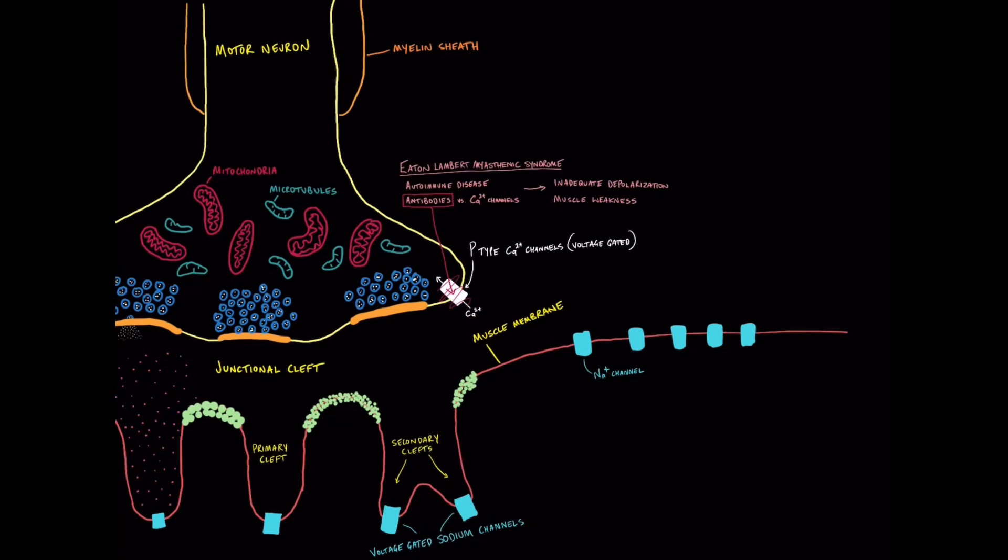So Eaton-Lambert, that's a nice anesthesia related application of these calcium channels. So if you're doing a thoracic anesthesia rotation, something to think about with small cell lung cancer and your use of neuromuscular blocking agents.